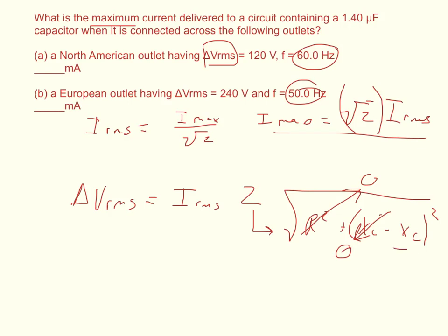And so I'm going to have a capacitive reactance squared, and then I'm going to take the square root of that and I'll have that the delta V RMS is equal to I RMS times the capacitive reactance.